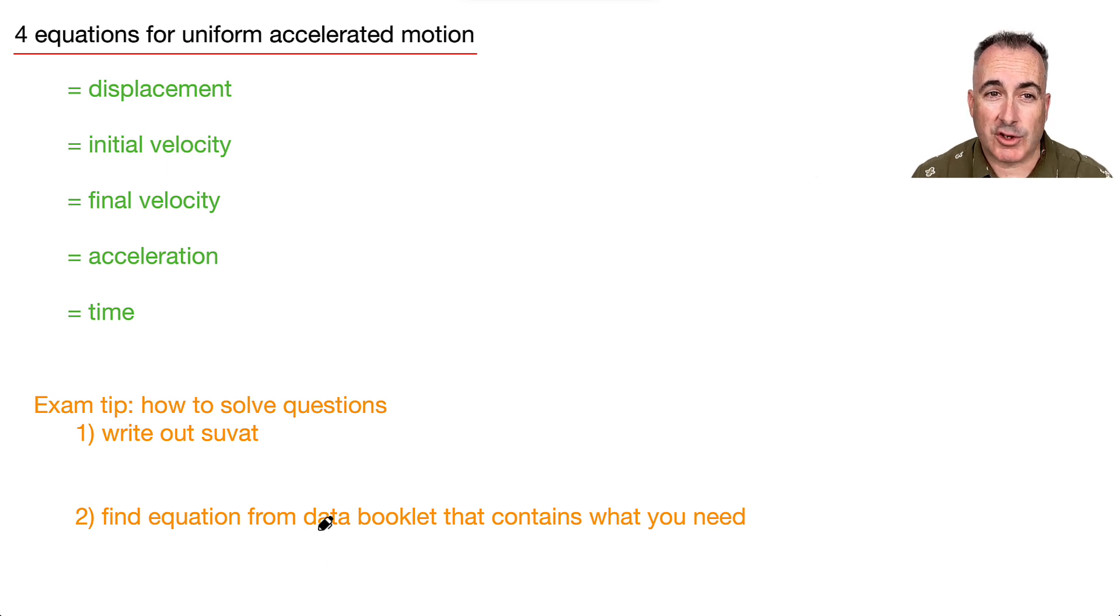So we have four equations for uniform accelerated motion. And this is good, because these are actually in your data booklets. Let's define all the variables first. We've got S is displacement. U is the initial velocity. V is the final velocity. Remember, it could be speed as well. A is acceleration, and T is time. Let's remind ourselves what are the units again? This is in meters. This is in meters per second. V is meters per second as well. Acceleration is meters per second squared. And time is in seconds.